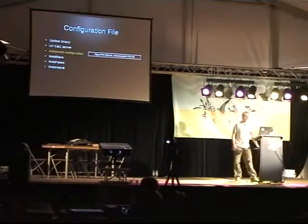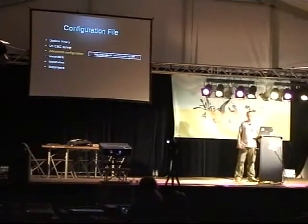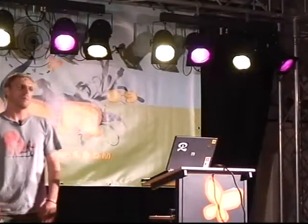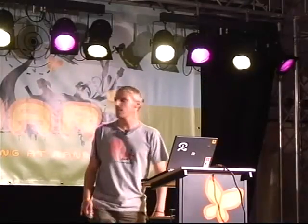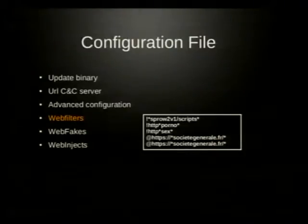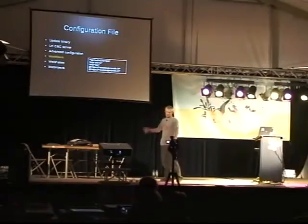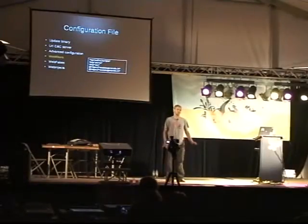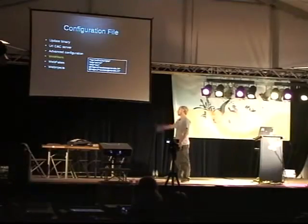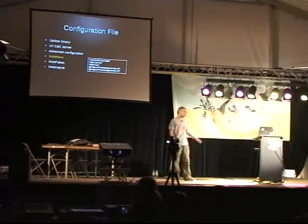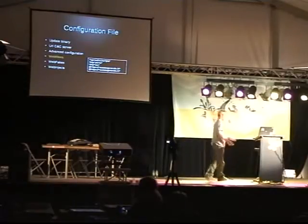The three main configuration options basically capture all data, but for banking sites it needs some special configuration. This configuration includes the web filters. As you can see in the configuration, some URLs or some strings are put with an exclamation mark, which basically means you skip this data. Each URL which fits one of these strings gets skipped, to avoid capturing data you don't need or don't want to.